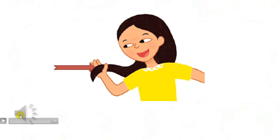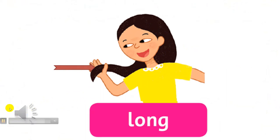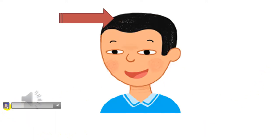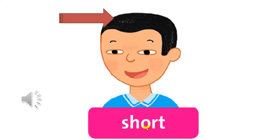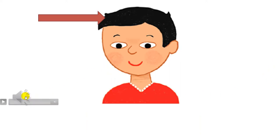Please look at her hair — long. Now let's spell: l-o-n-g. Long. Okay, next word: short. Now let's spell with me: s-h-o-r-t. Short. Repeat with me please — short.